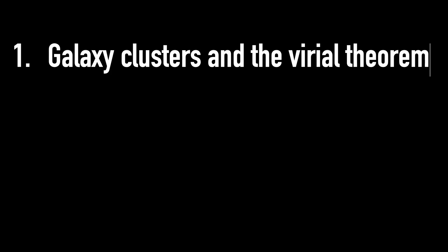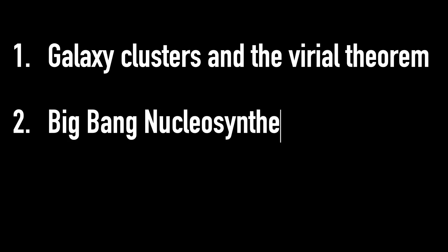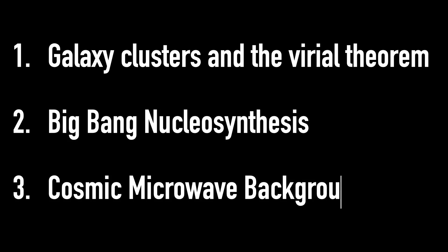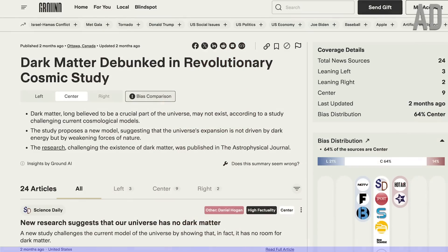In this video I want to talk about three of those different ways. First, from observing clusters of galaxies to work out the ratio of visible to dark matter. Second, using something called big bang nucleosynthesis. And third, from looking at the cosmic microwave background. Knowing the history and ins and outs of these three methods will hopefully give you some context when you see new dark matter research articles covered in the media.